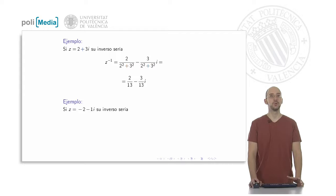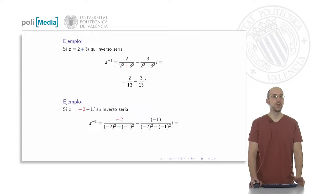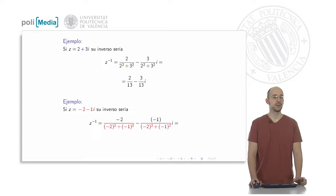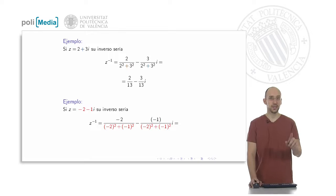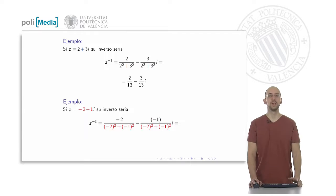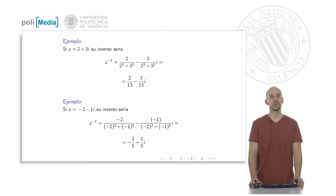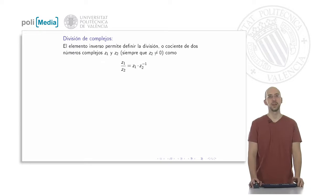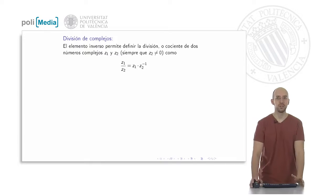Another quick example: for the complex number minus two minus i, we apply the formula again — the real part goes in the first fraction, the imaginary part in the second, and below we place the sum of squares of the real and imaginary parts. Notice that between the two fractions there is always a minus sign. Here, minus minus one in the numerator gives a positive fraction, so the result is minus two fifths plus one fifth i.